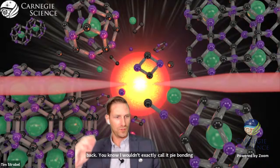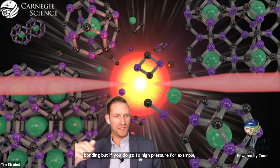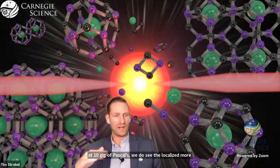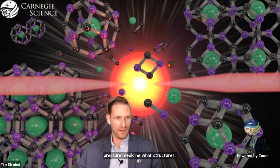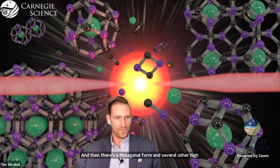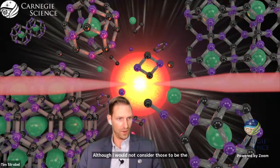If you do go to high pressure, for example, at 10 gigapascals, we do see more delocalized bonding, and actually all of the metallic structures of silicon would have more delocalized bonding. We see localized in the ambient pressure metastable structures, delocalized bonding in the high pressure structure. Although I would not consider those to be the role of the pi electrons like in carbon.